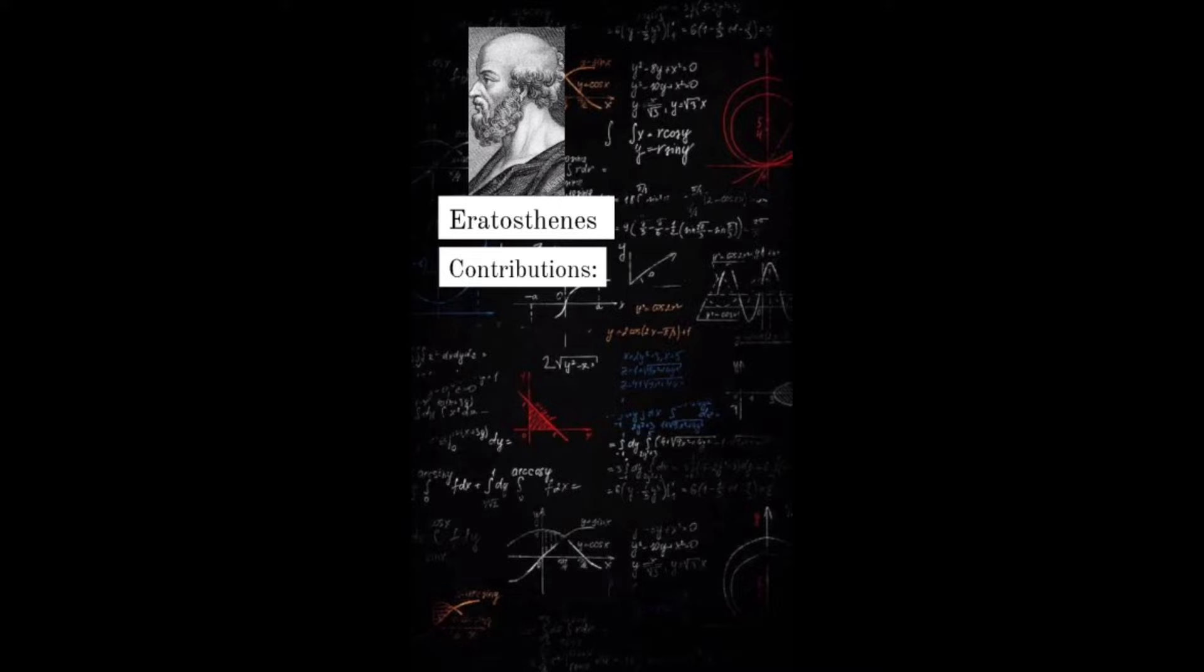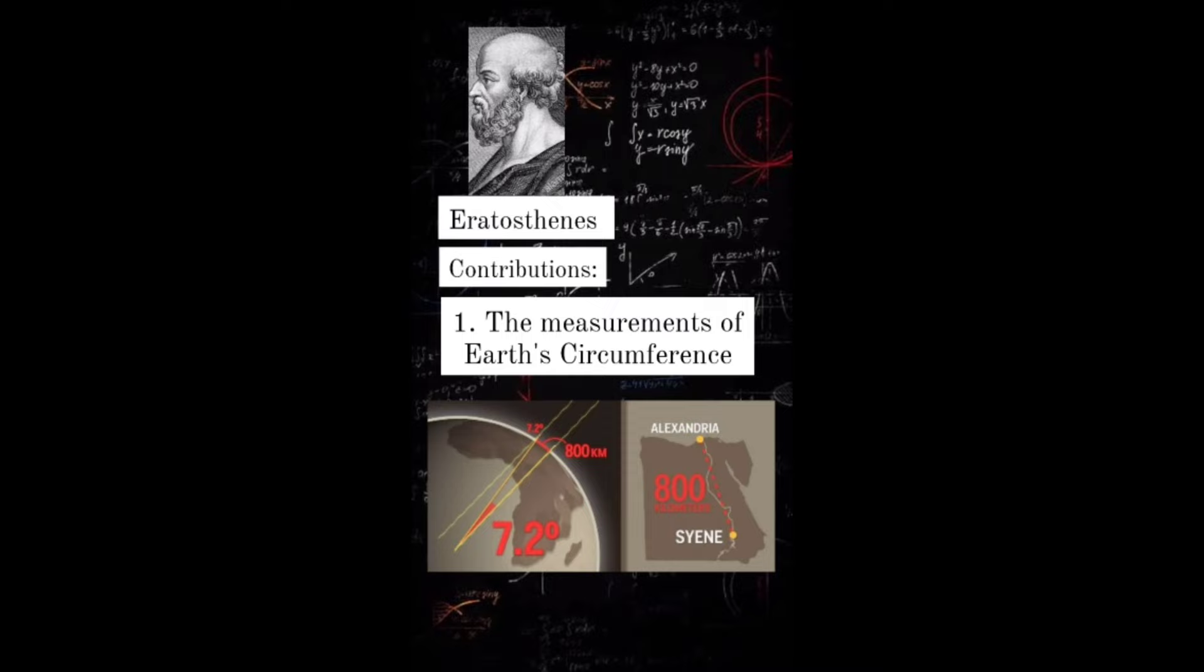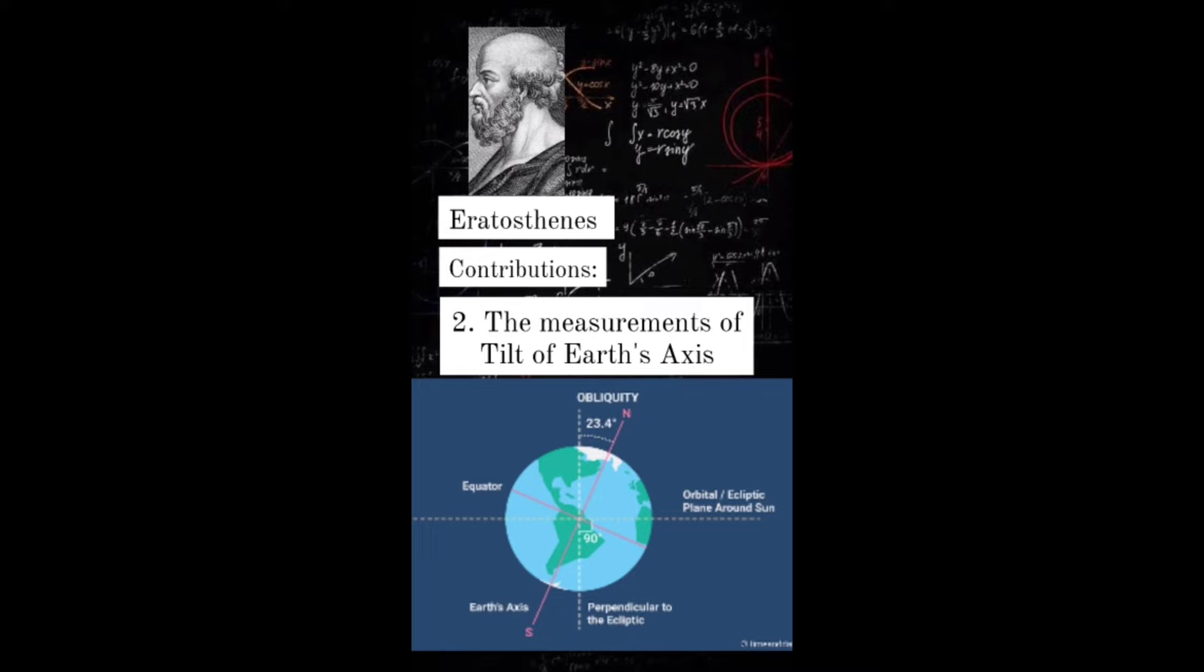Here are some of his contributions. First, the measurement of Earth's circumference. He used shadows and angles of the sun and the distance between the city of Alexandria and Cyrene.